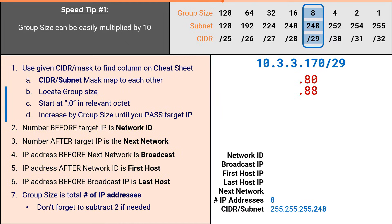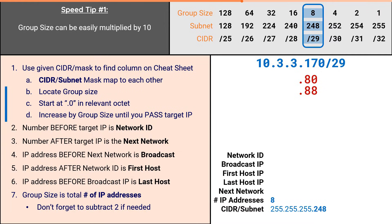Let's backtrack a bit and imagine our problem was 10.3.3.170/29. The group size and mask didn't change, so those answers are still accurate. But we are now in a new sub-network and therefore have different answers for the remaining attributes. We were able to use speed tip number 1 to jump to .80 and then continued incrementing by 8, but as you can see, to get to .170, even starting at .80 would take a long time. So there's a second part to speed tip number 1.